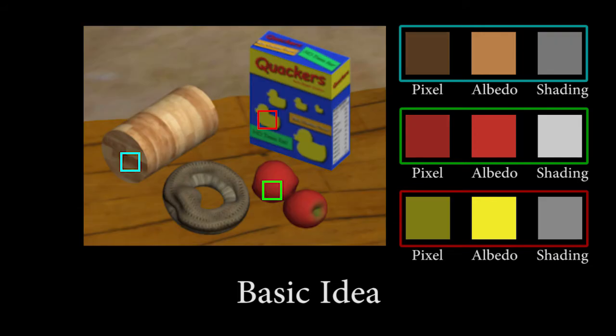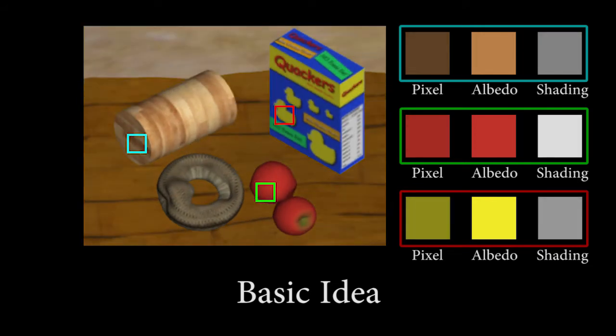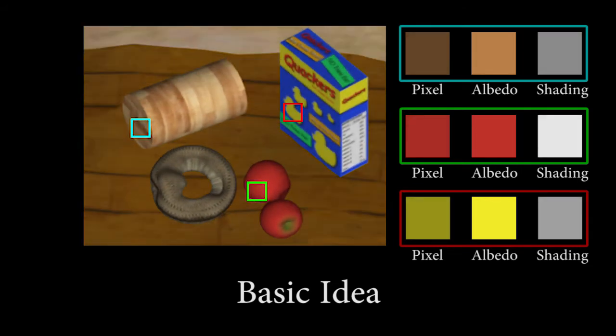Optical flow tells us which pixels are in correspondence. This provides strong temporal constraints for estimating intrinsic video.